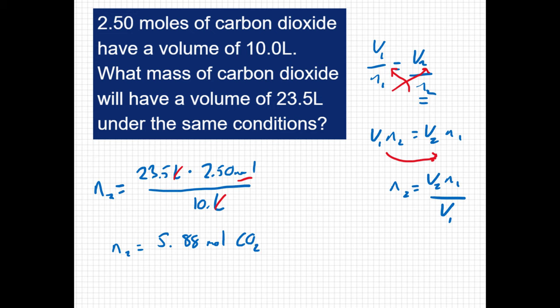So that's Avogadro's law, but if we take a closer look at the question, they didn't want moles of carbon dioxide. They want the mass of carbon dioxide. So we're going to have to take this number and convert it to grams. So carbon dioxide has a mass of 44 grams for every one mole.